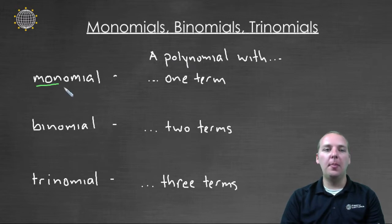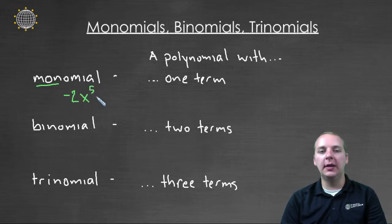Poly means many, mono means singular. So we have a monomial. A monomial, for example, would be something like negative two x to the fifth. So if that was your polynomial,